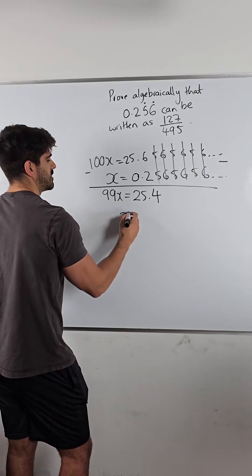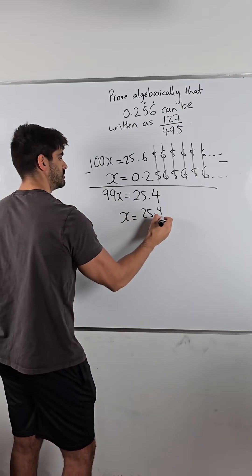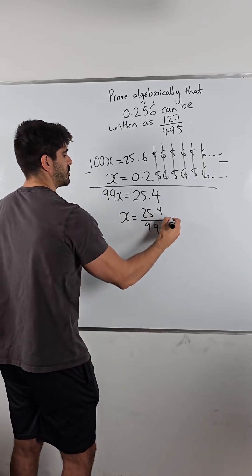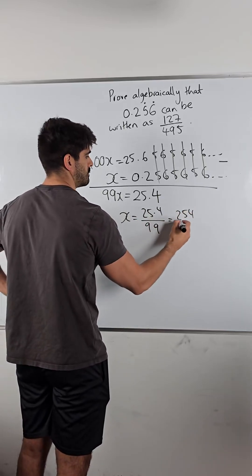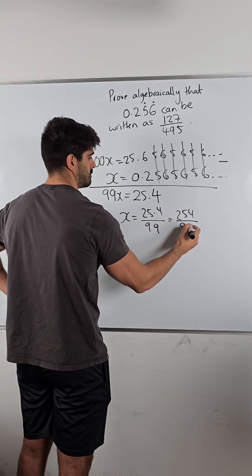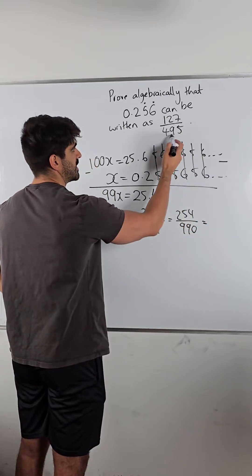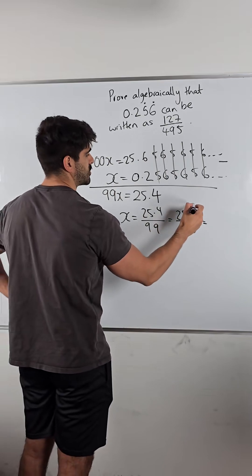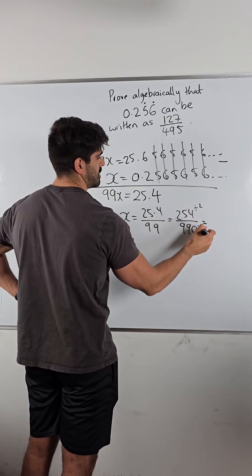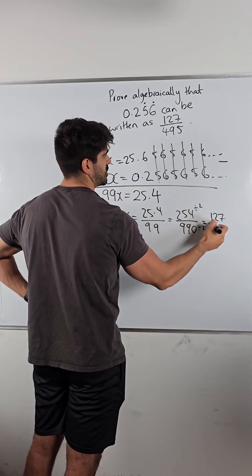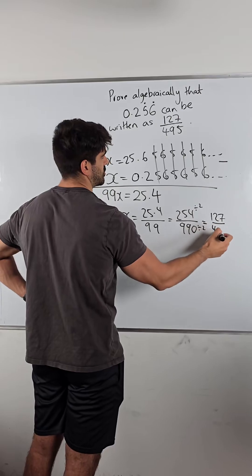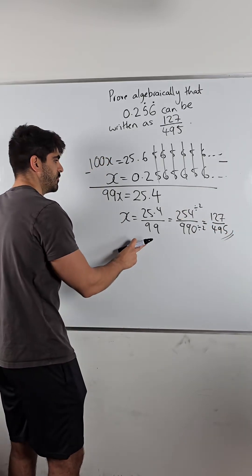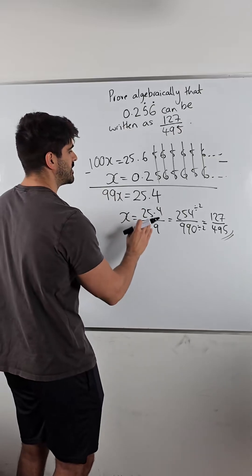We divide, then multiply top and bottom by 10, which gives 495 over 990. You can see that 495 is half of 990, so they've divided top and bottom by two. They like to give you the answer for these questions so you don't need to think too hard — just show that you divide top and bottom by two, and that's it proved for an easy three marks.